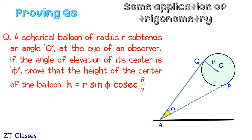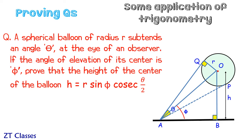OQ and AP are the tangents to the circle. If the angle of elevation to its center is phi — here O is the center, and the line from A to O gives the angle of elevation phi — then the height of the center O from the ground is represented by line OB, taken as H. We have to prove that H equals r times sine phi times cosecant theta by 2.